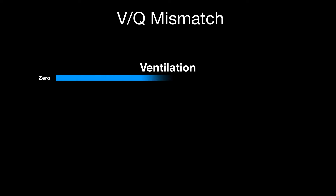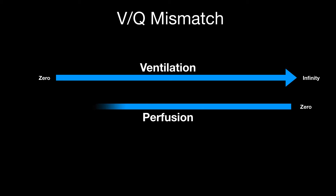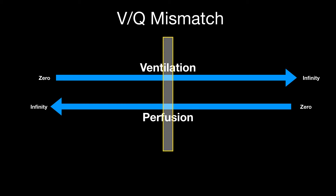Let's apply this to VQ mismatch. Ventilation goes from zero to infinity in one direction. Perfusion goes in the opposite direction, also from zero to infinity. There is a place right in the middle where you have optimal ventilation and perfusion — where everything is matched one to one, with absolutely no mismatch. This occurs in normal life when we breathe at normal tidal volume when we are not sick. We call this optimal FRC.